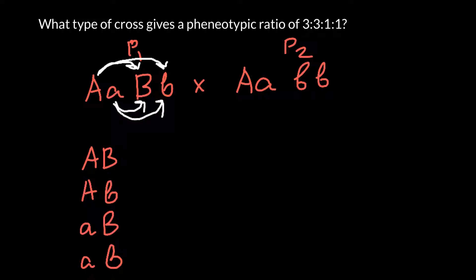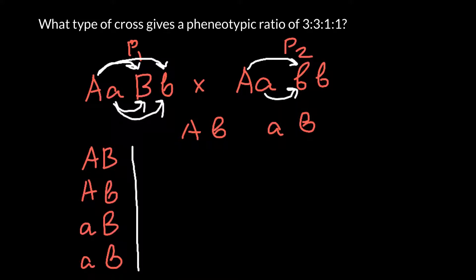As for Parent 2, it can only produce two variants of gametes: capital A and small b, and small a and small b. Let's now make a Punnett square.